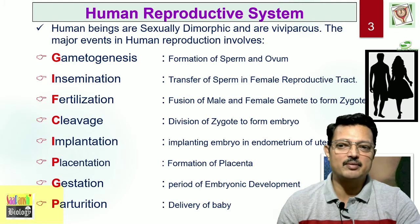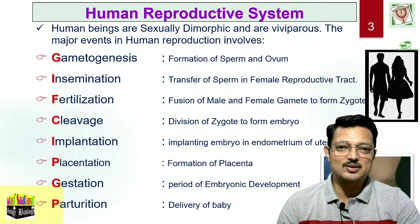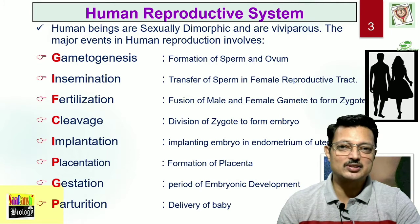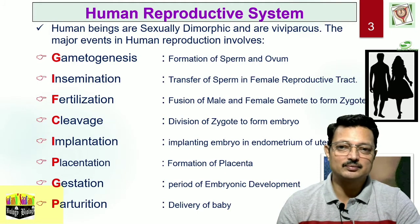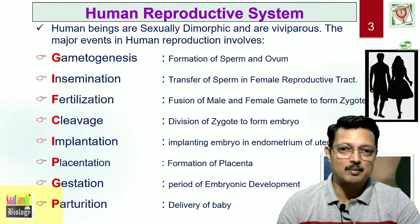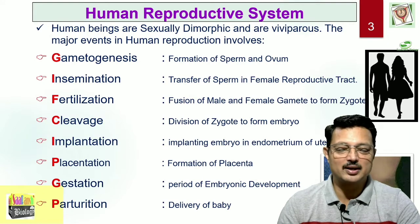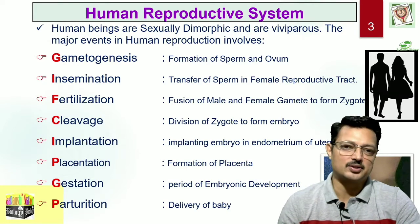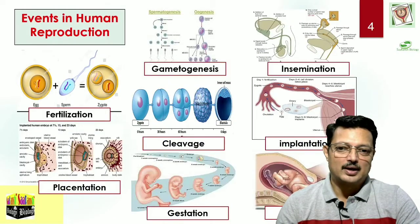Human reproduction can be subdivided into certain segments: gametogenesis, which is the production of specialized cells or gametes; insemination, where gametes are transported; fertilization, which results in mixing of genetic components; zygote formation; cleavage; implantation; placentation, where a physiological and anatomical connection is established between the embryo and the mother; then the period of gestation — the whole growth period — and ultimately parturition, the delivery that results in the birth of the baby.